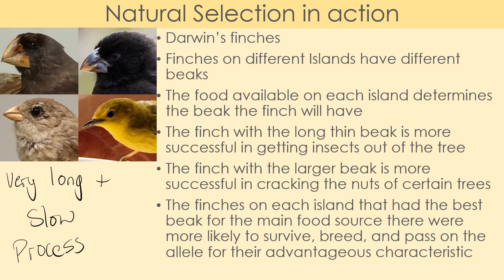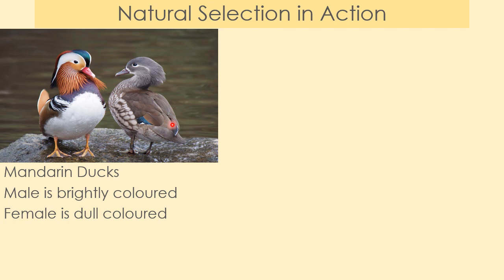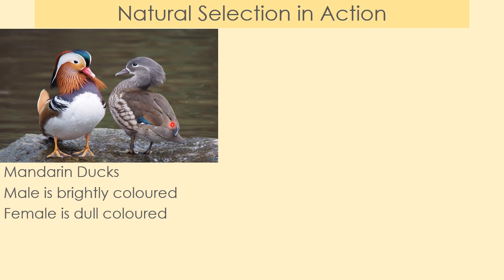Evolution is not quick — we can very rarely see it happening; it occurs over thousands or millions of years. Now you're going to have a go yourself. We have mandarin ducks, which came from China and now live all over the world — there are now more breeding pairs in the UK than in China. The male drake is very brightly colored, while the female is dull colored. Pause the video and tell me: why do the male and female ducks look so different? Think about natural selection.